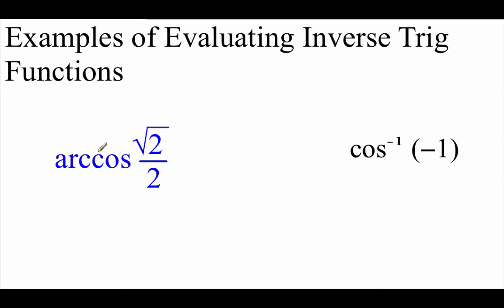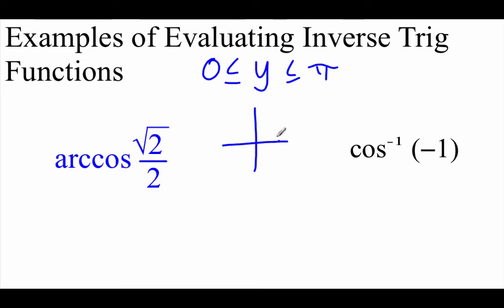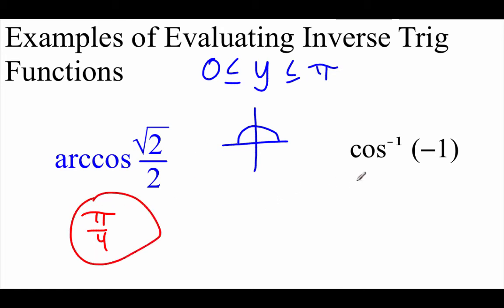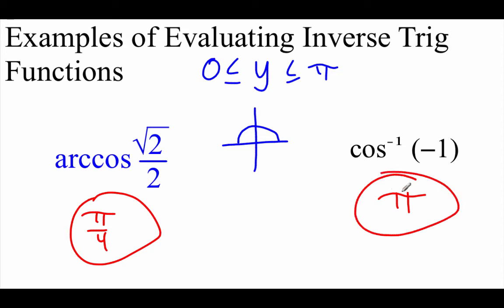When evaluating arc cosines or inverse cosines, remember those range values are between 0 and pi, so we're looking on the top half of the unit circle. For the arc cosine of root 2 over 2, we're looking for an angle where the cosine value is root 2 over 2, and the angle is pi over 4 in the first quadrant. Pi over 4 is between 0 and pi, so that's our answer. For the inverse cosine of negative 1, a cosine value of negative 1 happens at angle pi, which fits in our interval from 0 to pi, so that's our answer.